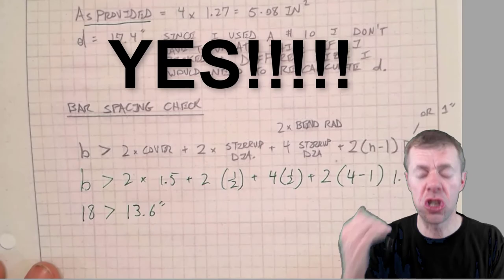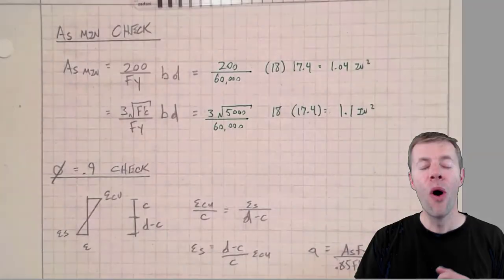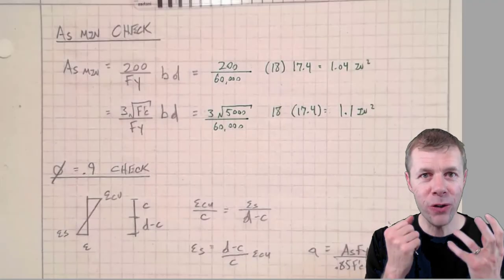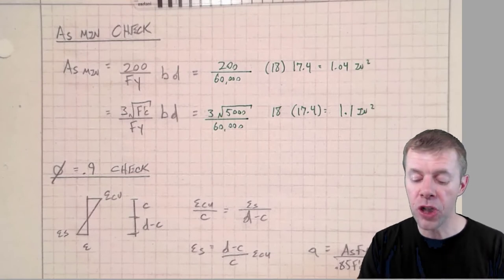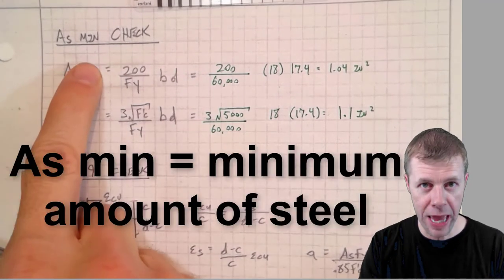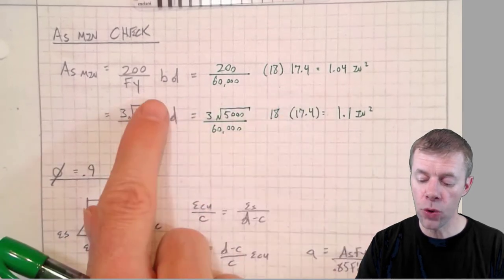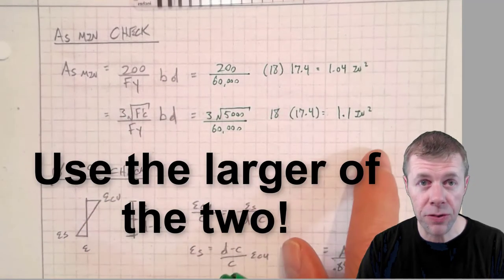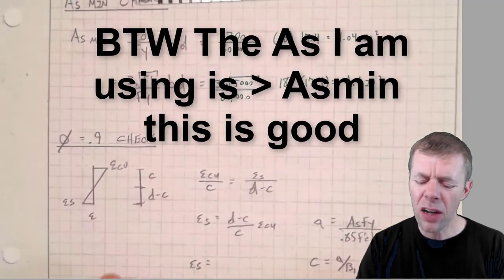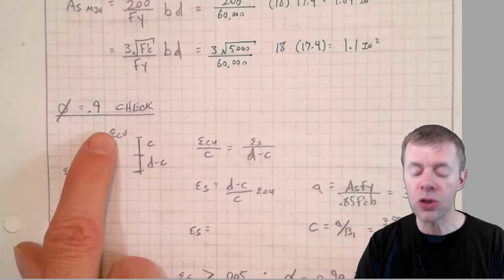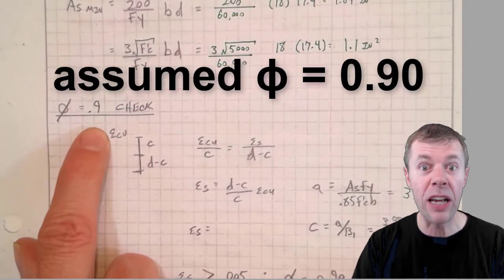We're on the downhill stretch, almost there. I have to do some checks for my As min. I use these two equations and pick the greater. Now I also, if you remember in the very beginning, assumed my phi was 0.9, I have to check that.